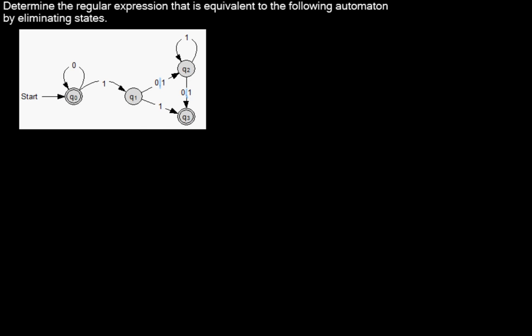Then the next step we have to do is that we want to eliminate every state which is neither a final state nor an initial state. So in this case, we want to eliminate Q1 and Q2 first. I will start with Q1.